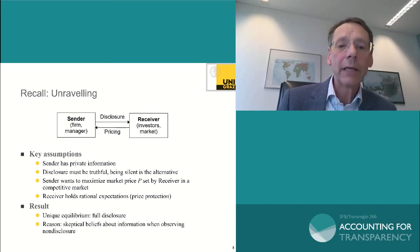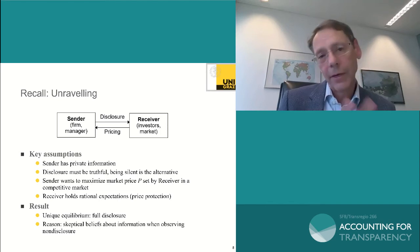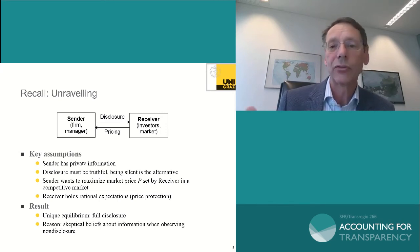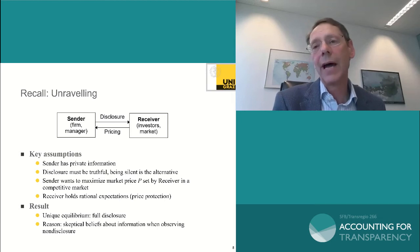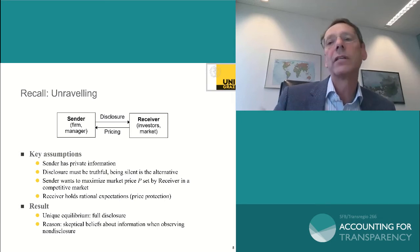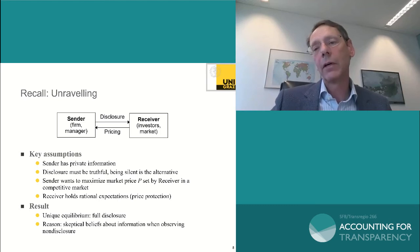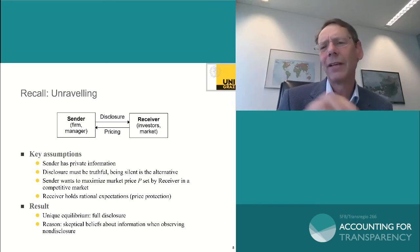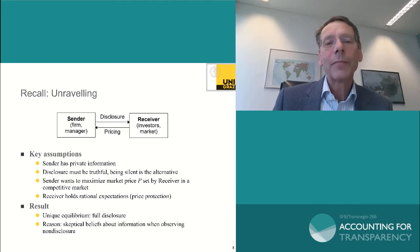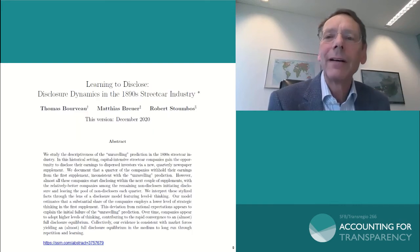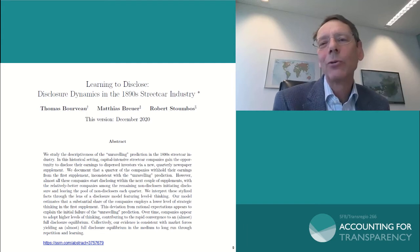In unraveling, the unique result given this setup is full disclosure. The reason is the extremely skeptical belief: once you don't inform the receiver, they assume the worst that can happen. And once they assume that, it triggers disclosure. This is what Joachim showed with the nice example with dots — greens and reds. You might want to go back to that one. To give a brief example of how to test those things: I recently saw a paper about 'learning to disclose' presented.